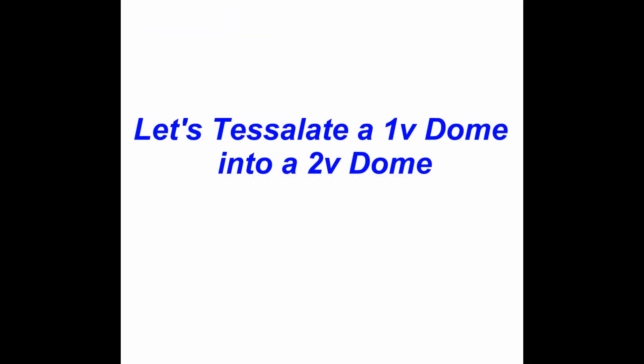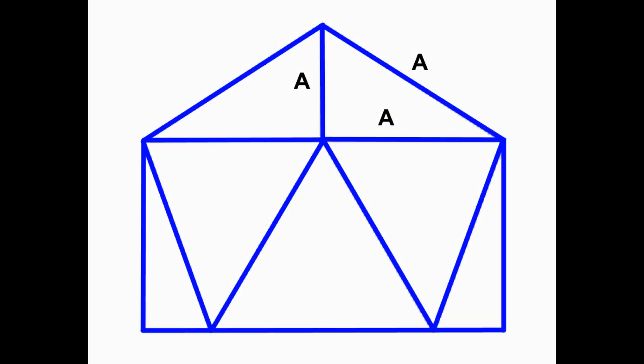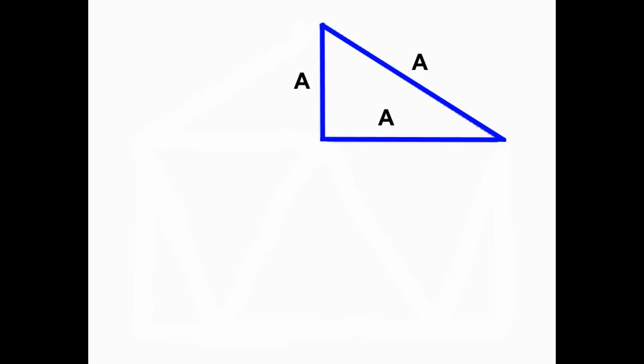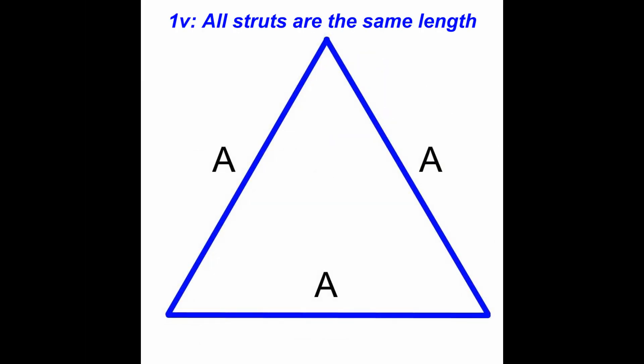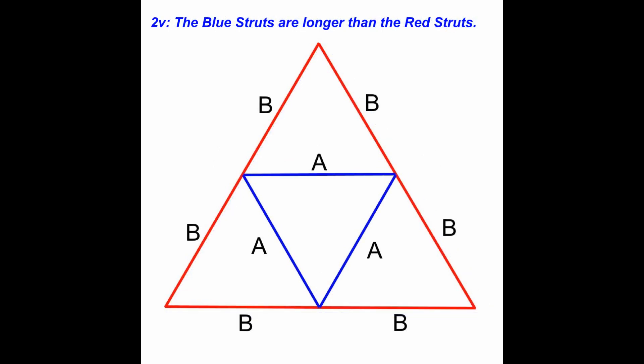To understand this, let's tessellate a 1 frequency dome into a 2 frequency dome. A 1 frequency dome is made up of 15 equilateral triangles — an equilateral triangle means all sides are the same length. To make a 1 frequency dome into a 2 frequency dome, each triangle is tessellated into 4 triangles. The tessellation of a curved geodesic dome surface results in different lengths for the struts — the blue A struts in the center of the triangle will be longer than the red B struts.